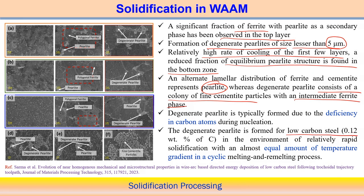Degenerate pearlite forms in low carbon steel in an environment of relatively rapid solidification. Low carbon percentage along with rapid solidification is the favorable condition for degenerate pearlite. Another condition is that cyclic melting and remelting produces an almost equal amount of temperature gradient — not much difference in temperature gradient due to the cycling melting and remelting from this particular tool path.